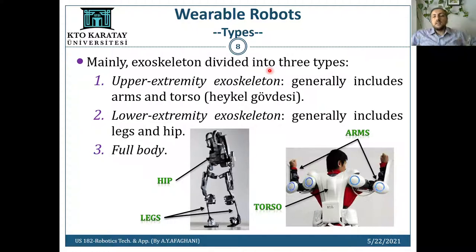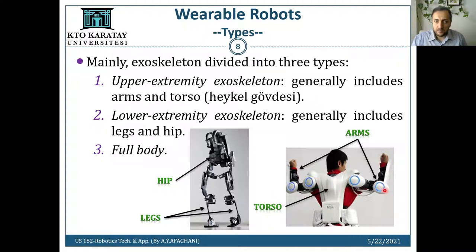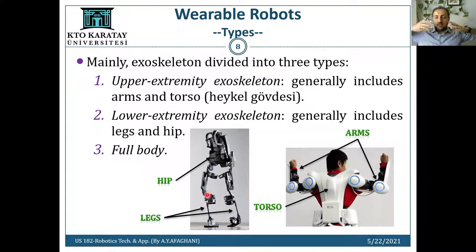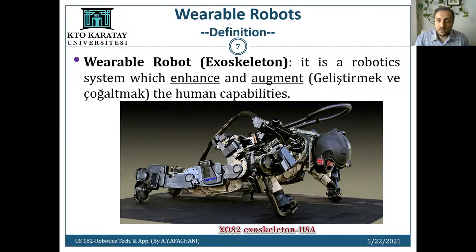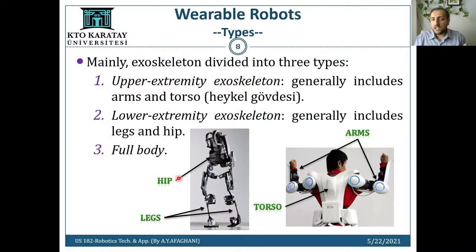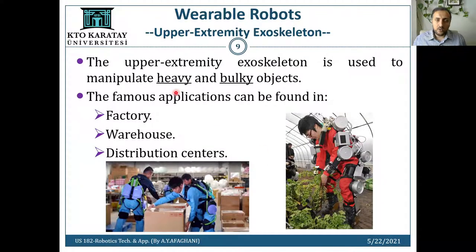We have three types. The first is the upper extremity exoskeleton — the upper part — which consists of arms and torso. The second is the lower extremity exoskeleton, which includes the hip and legs. The third is the full body exoskeleton, covering everything. Depending on what application you need, you can design your wearable robot accordingly.